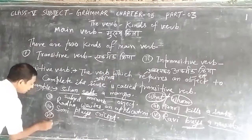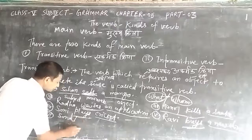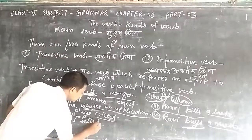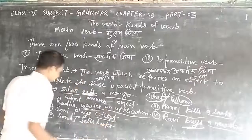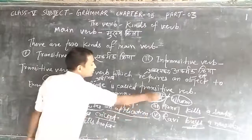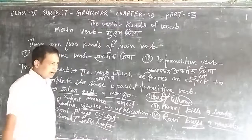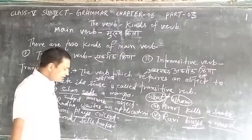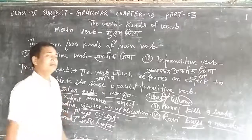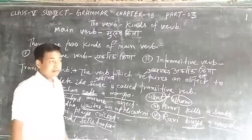Sixth example: 'Sonali sells books.' If somebody asks 'Sonali sells what?', the answer will be 'books' or some other things. The verb 'sell' requires an object to complete its sense. So, 'sell' is a transitive verb.